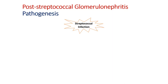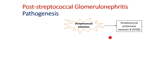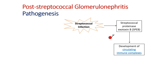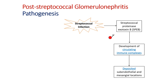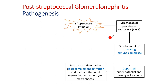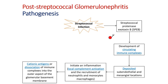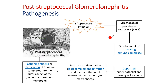Regarding the pathogenesis of post-streptococcal GN: when there is a streptococcal infection, the bacteria releases streptococcal proteinase toxin B. The body develops antibodies against this toxin B, forming circulating immune complexes. These complexes deposit first in the sub-endothelial space, initiating local complement activation with recruitment of neutrophils and monocytes. Later, the antigen and immune complexes move into the sub-epithelial space, causing the famous post-streptococcal hump.